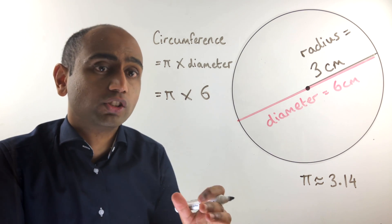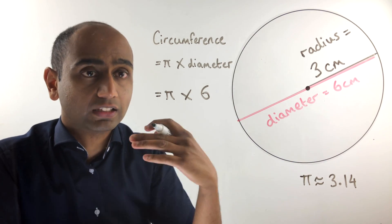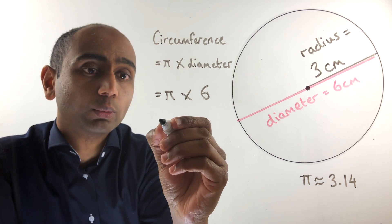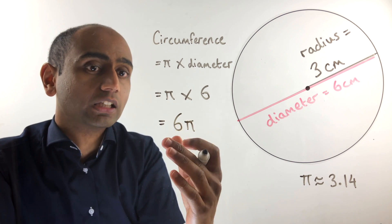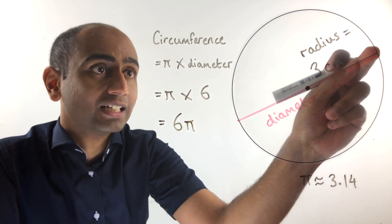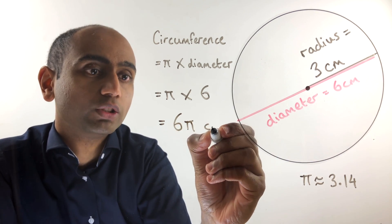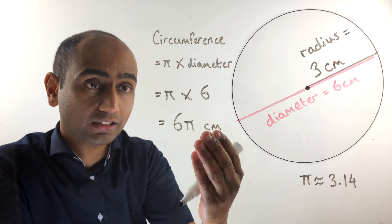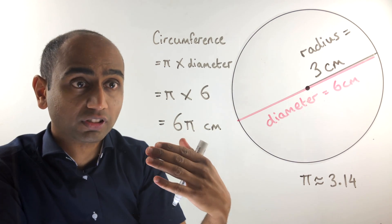Coming back to this question, we've got pi times 6, which is the circumference of this circle. From algebra you know we could simplify this to 6π. This is an exact answer in terms of pi. The circumference is a length — a distance all the way around the shape — and we are dealing with centimeters, so our units would be centimeters. 6π is exactly how many centimeters long the circumference is.